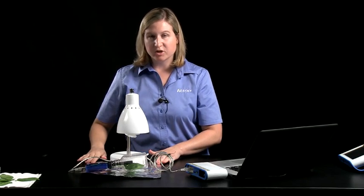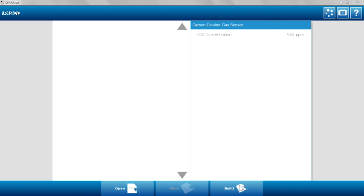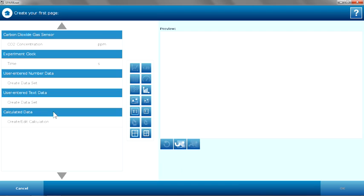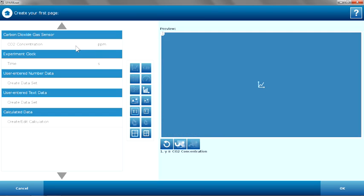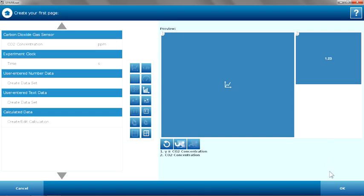Before I begin data collection, I'm going to need to open up a page or build a page in the SparkView program. I'm going to choose Build. My carbon dioxide gas sensor is listed. I'm going to click on CO2 concentration, and I want to create a graph display of that, so I'm going to click on the graph. But I also am interested in seeing a digits display of carbon dioxide concentration, so I'm also going to select the number button here. So we'll be able to see a graph and the parts per million in digits as the data is collected.